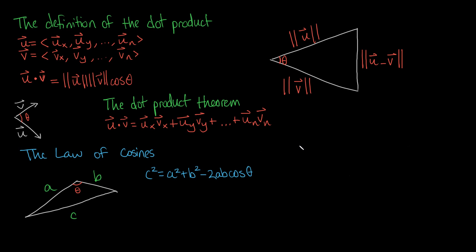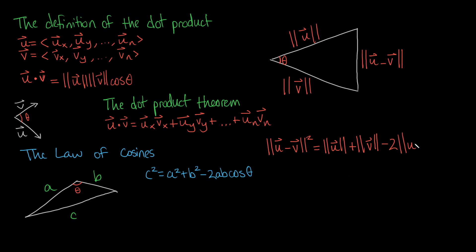Now we can use this triangle to make our equation. With u − v as side c, we have: |u − v|² = |u|² + |v|² − 2·|u|·|v|·cos(θ). And now we have this equation — it's pretty cool.